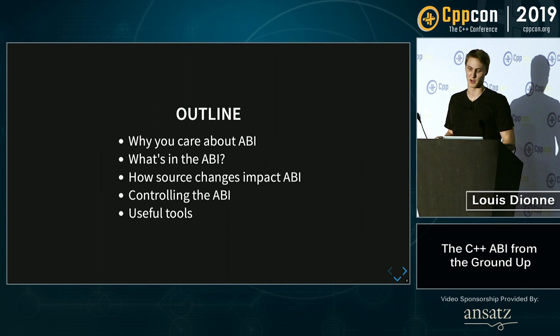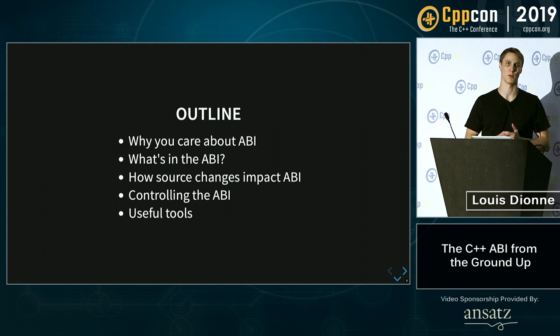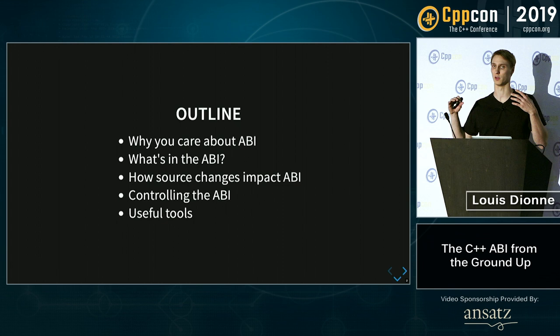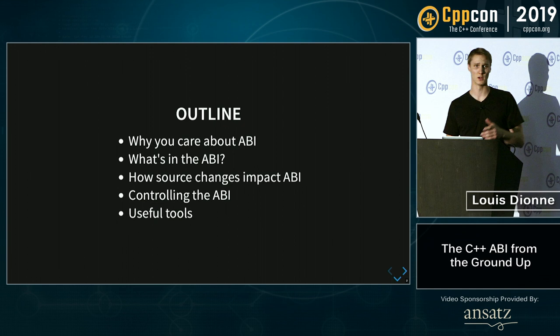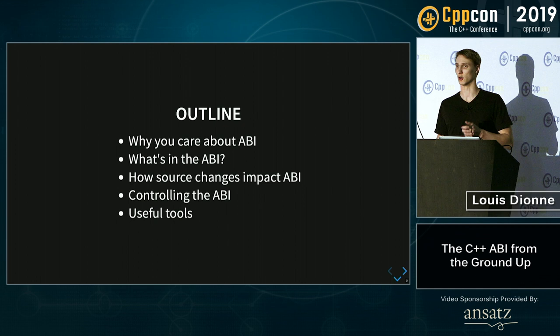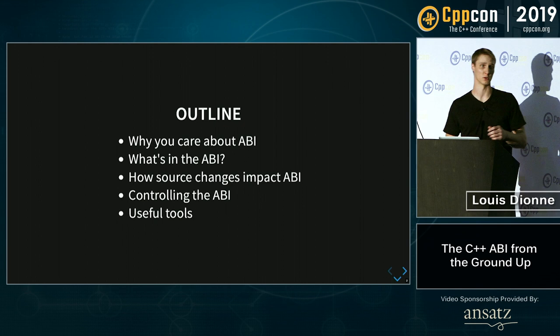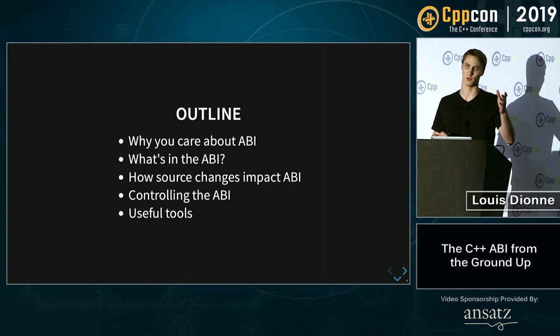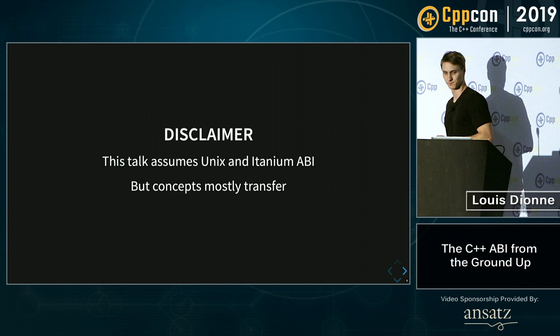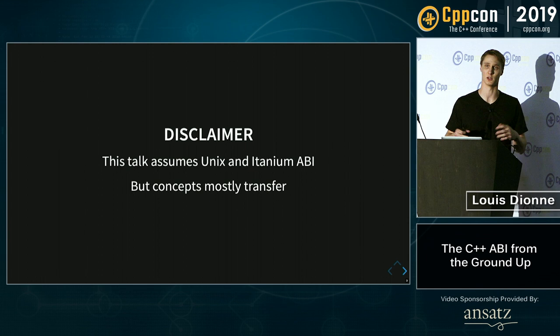So obviously we're talking about ABI. I'm going to start by explaining why you might care about keeping a stable ABI, then transition to explaining a few things that are specified in the Itanium C++ ABI. Then I'll go over how changes in your source code can impact your ABI, give tips for controlling your ABI surface through non-standard attributes, and finally show tools to detect ABI incompatible changes. Quick disclaimer: I'm assuming UNIX and Itanium C++ ABI, but most concepts transfer to other platforms.